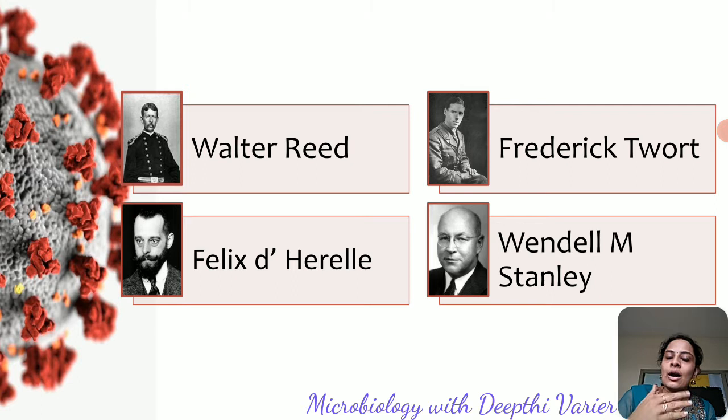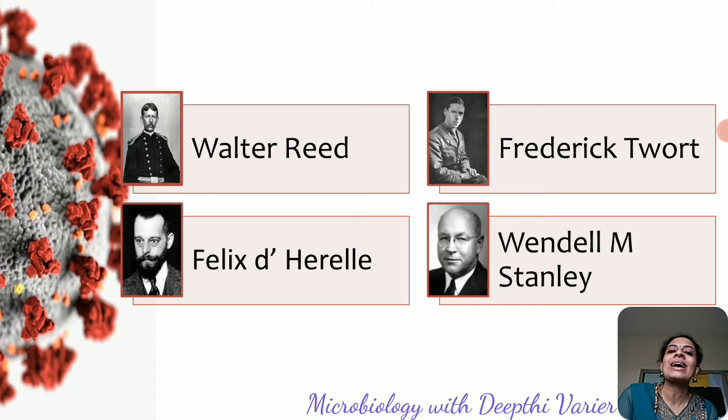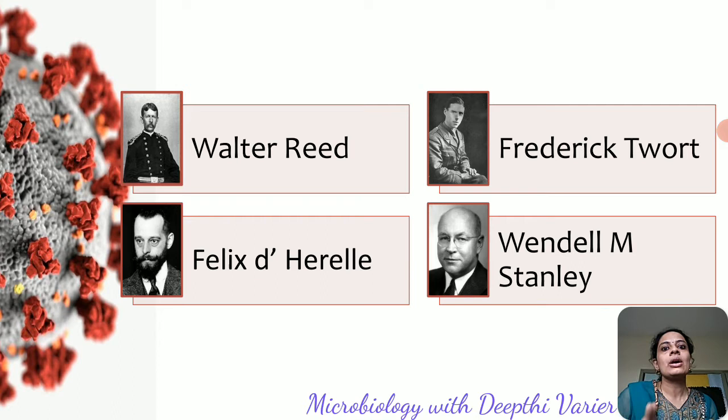After this there were many more discoveries. The first electron micrograph of a virus was obtained, again of TMV. Scientists Salk and Sabin developed vaccines against viral diseases, most notably for polio. Many new viruses were discovered during this period, and after all of this the era and science of virology was firmly established.